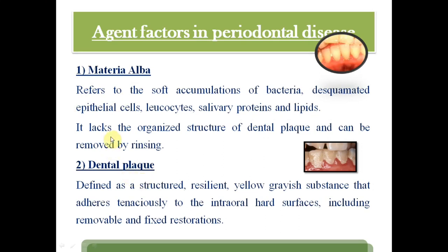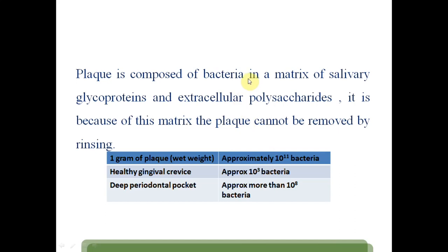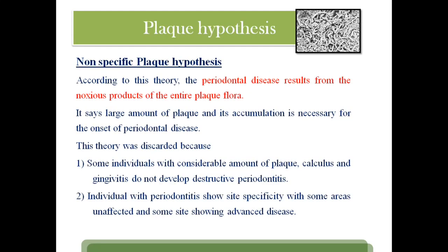Now agent factors: the most common is material alba and dental plaque. Material alba is the accumulation of bacteria, desquamated epithelial cells, glycosides, and salivary proteins — it lacks an organized structure. Dental plaque, by contrast, is a structured, resilient, yellow-gray substance that adheres tenaciously to intraoral hard surfaces. Plaque is composed of bacteria, glycoproteins, and extracellular polysaccharides. Because of this matrix, plaque cannot be removed by rinsing alone — only by proper brushing or scaling.